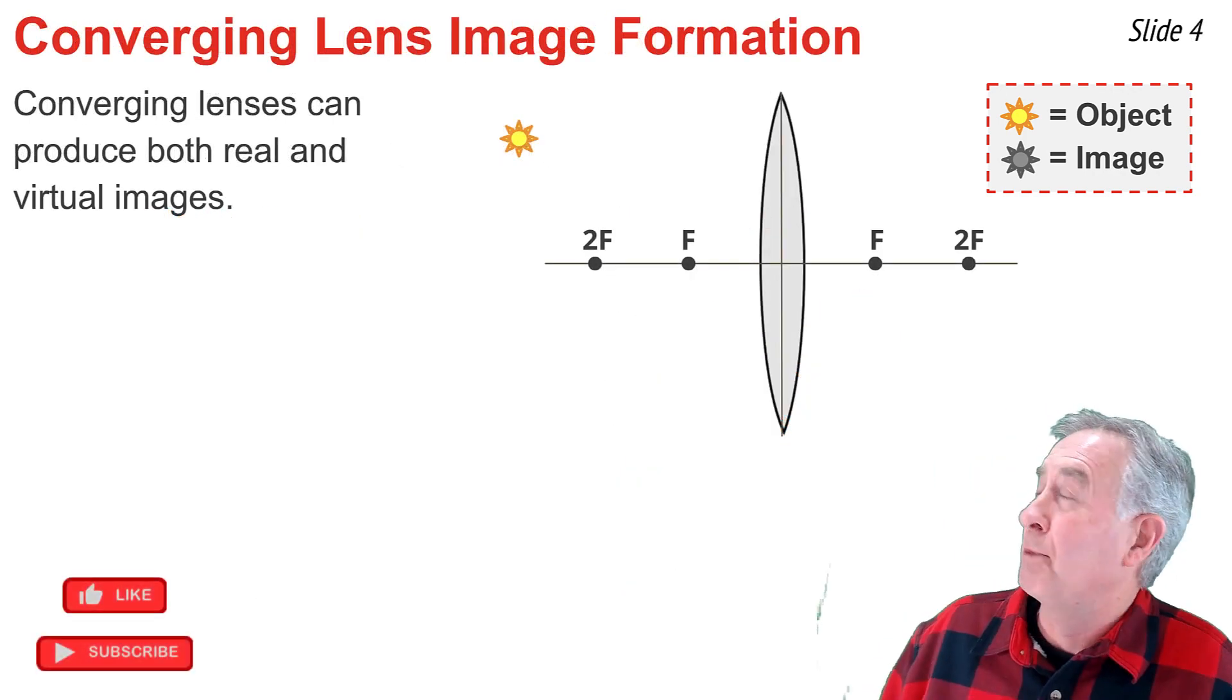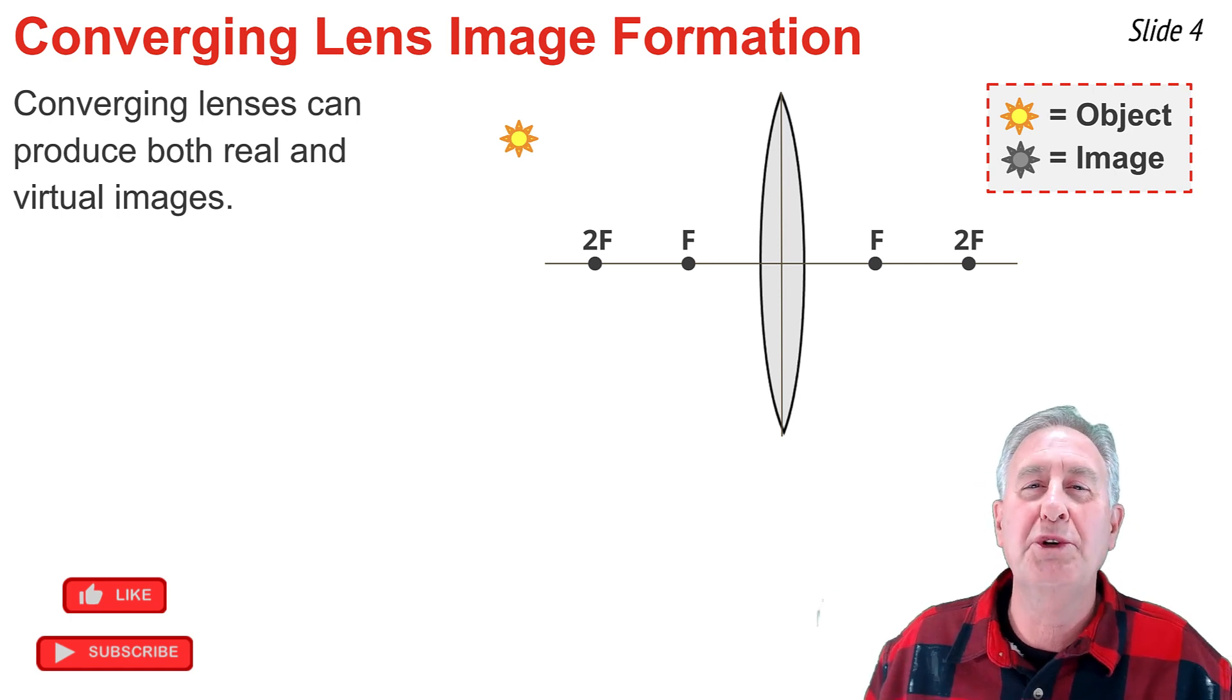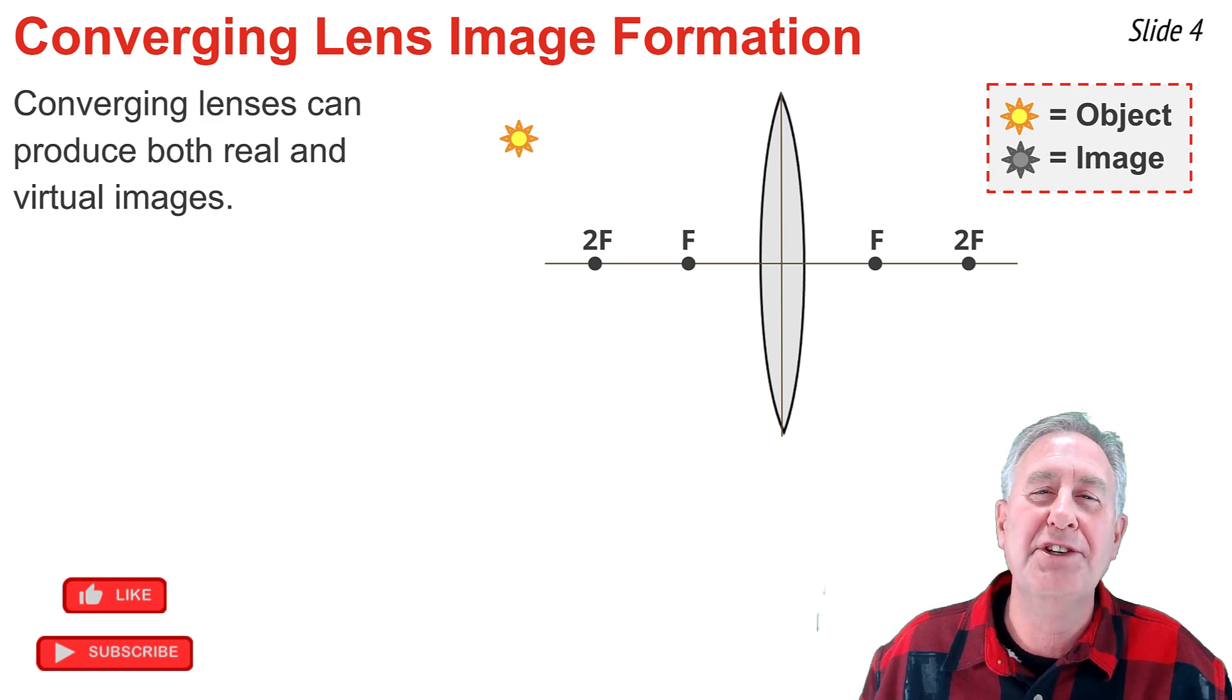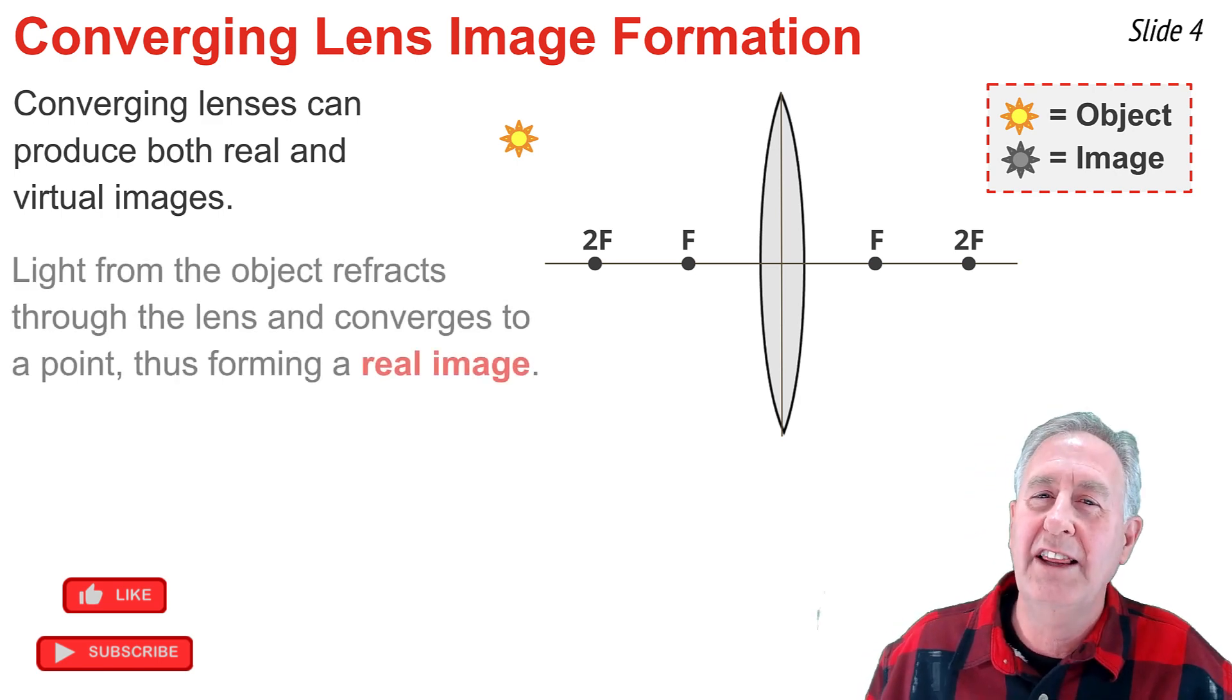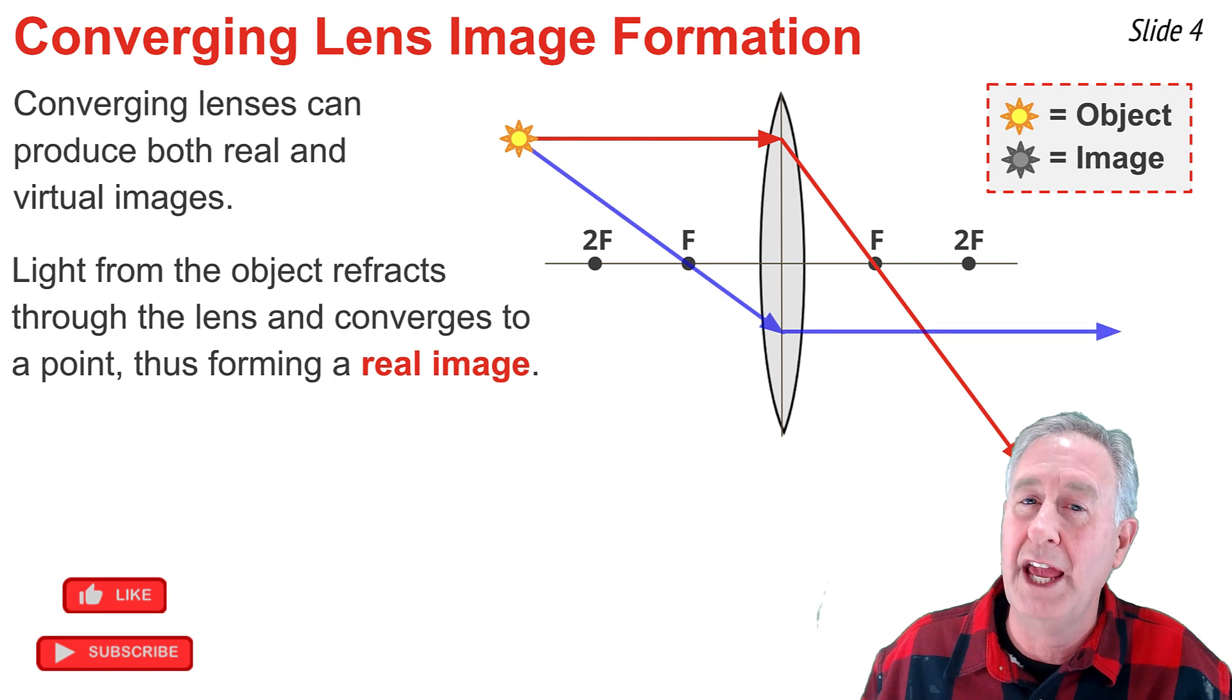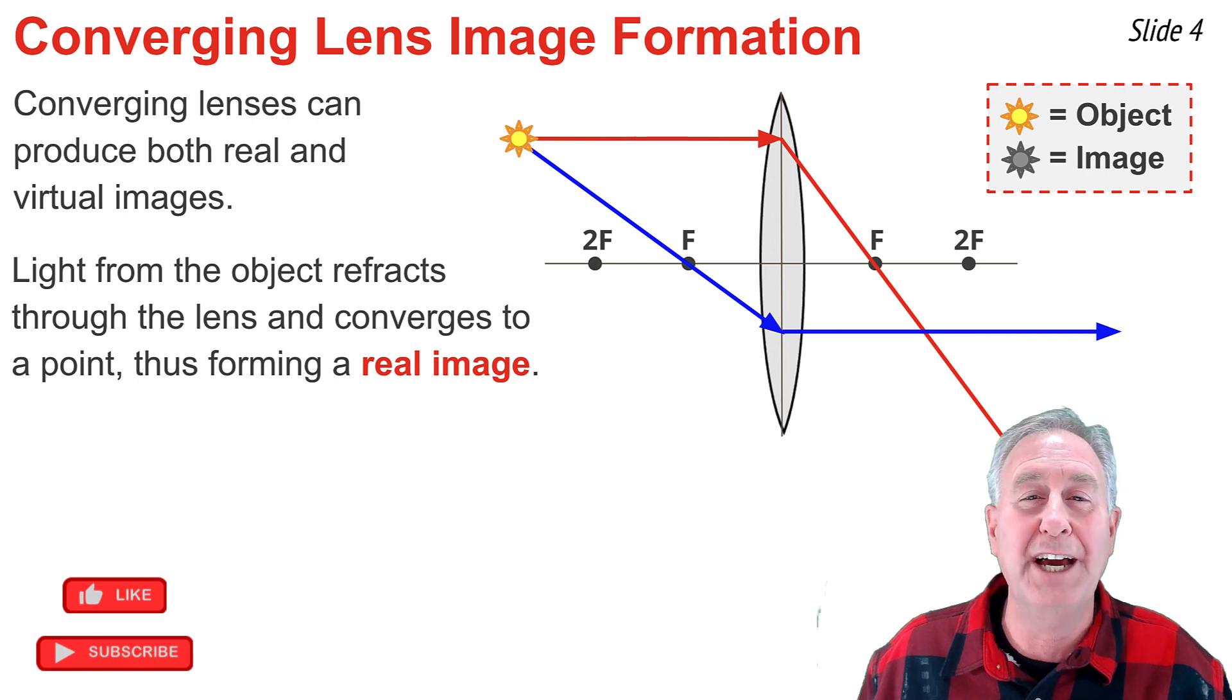Here we see a lightbulb placed in front of a converging lens. A converging lens can produce both real and virtual images, and in this discussion, I'll be discussing how a real image is produced by a converging lens. Light from this particular object location will refract through the lens and converge or come together at an image location. This image is a real image since the refracted rays are coming together or converging upon passing through the lens.